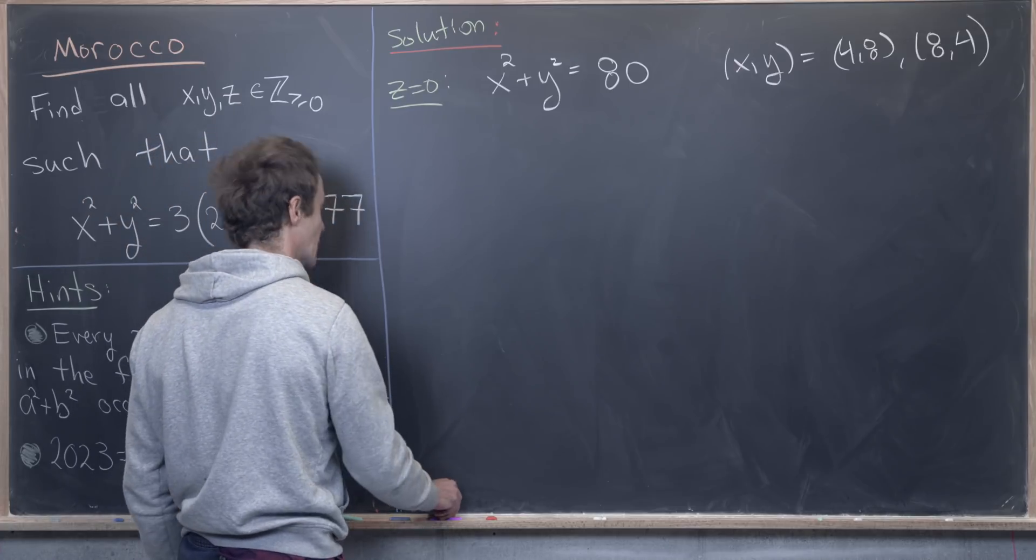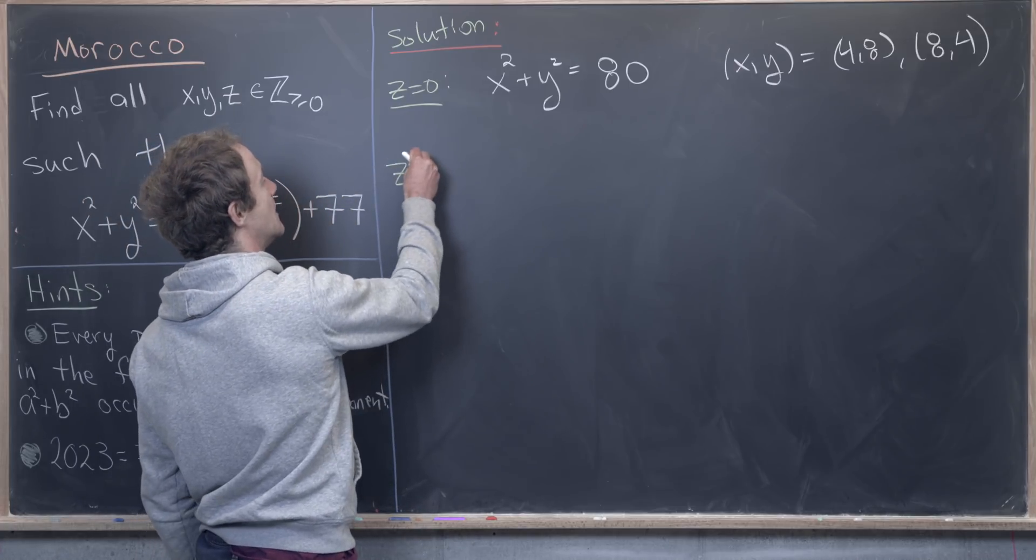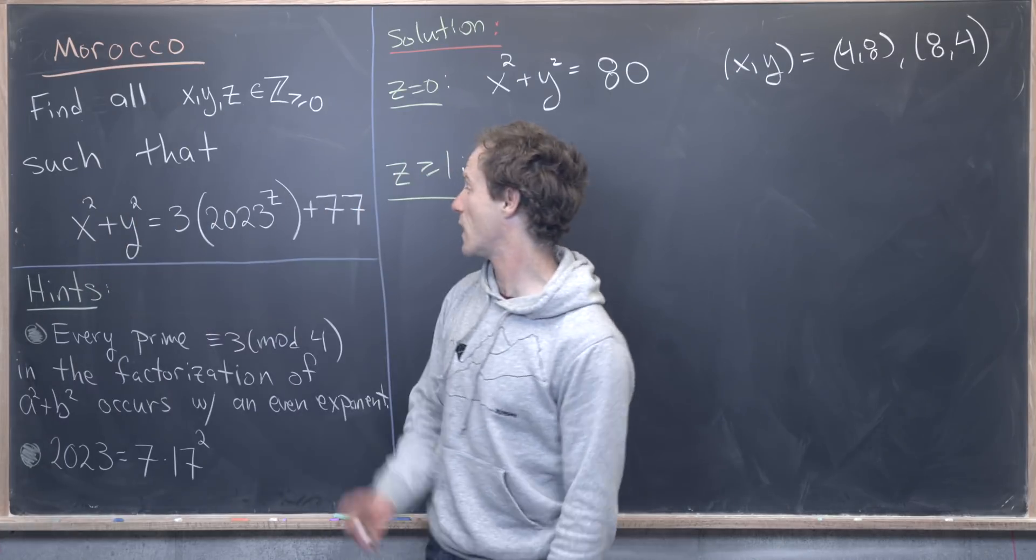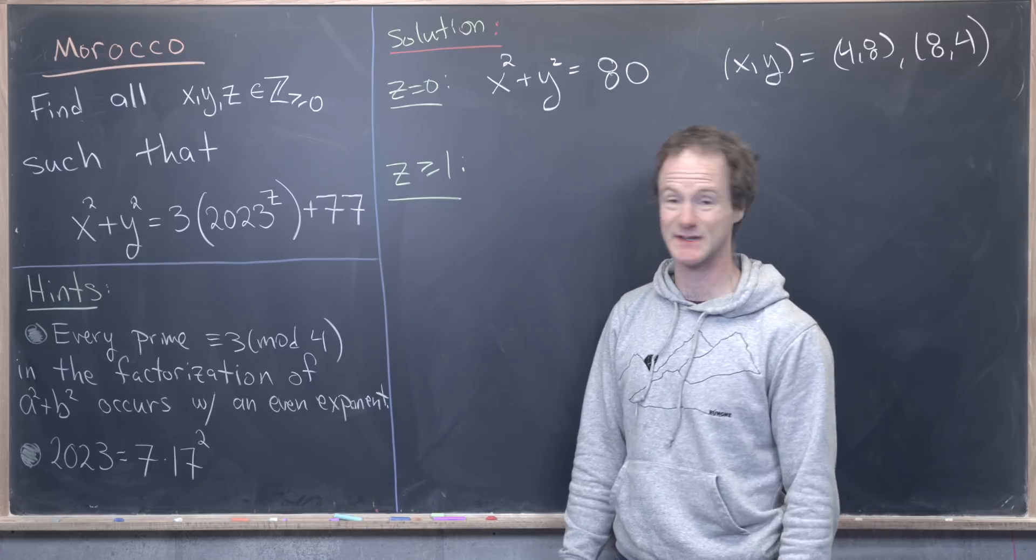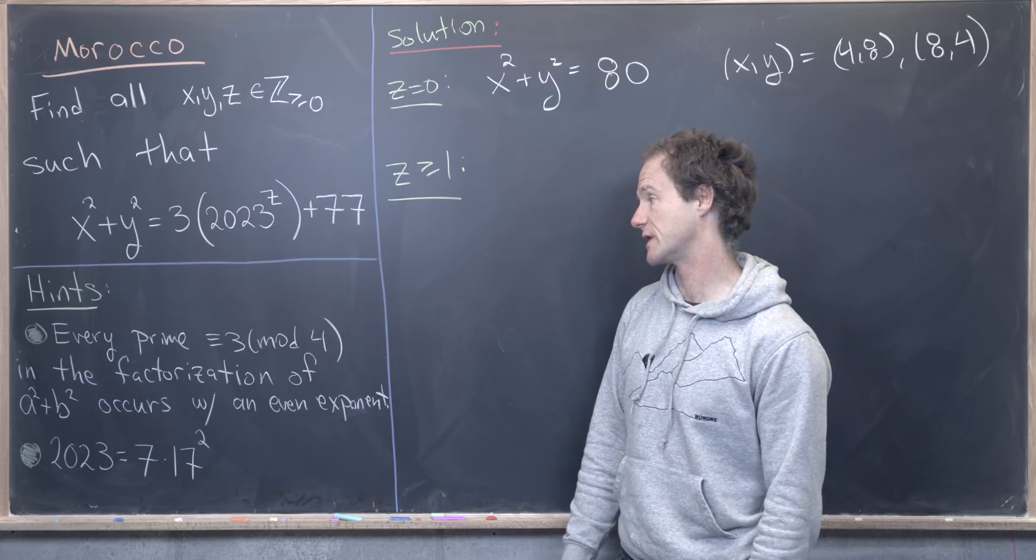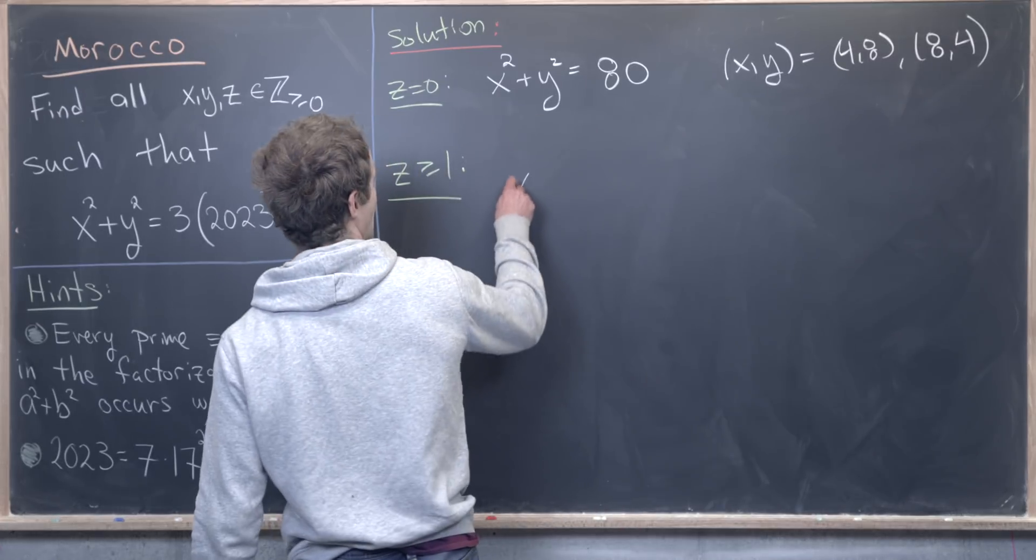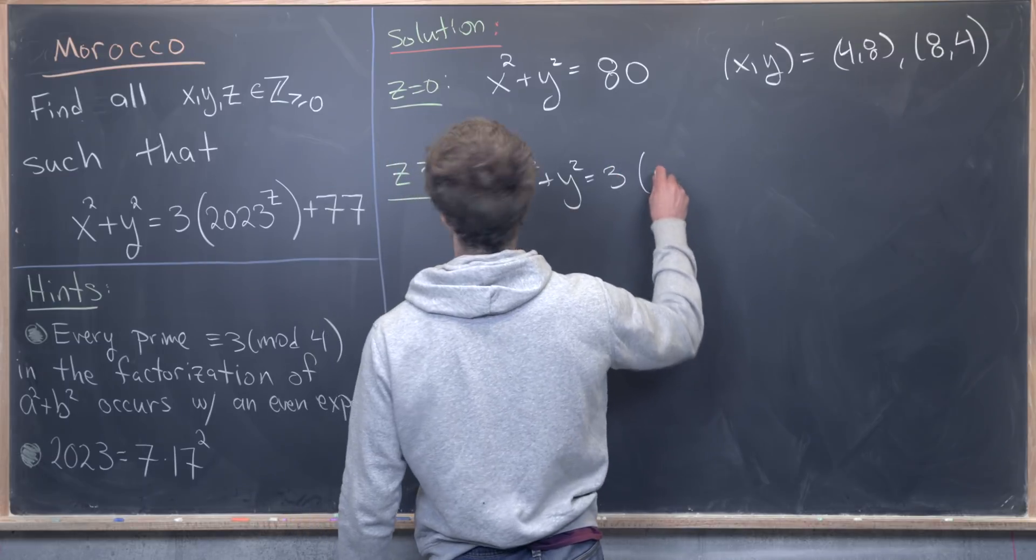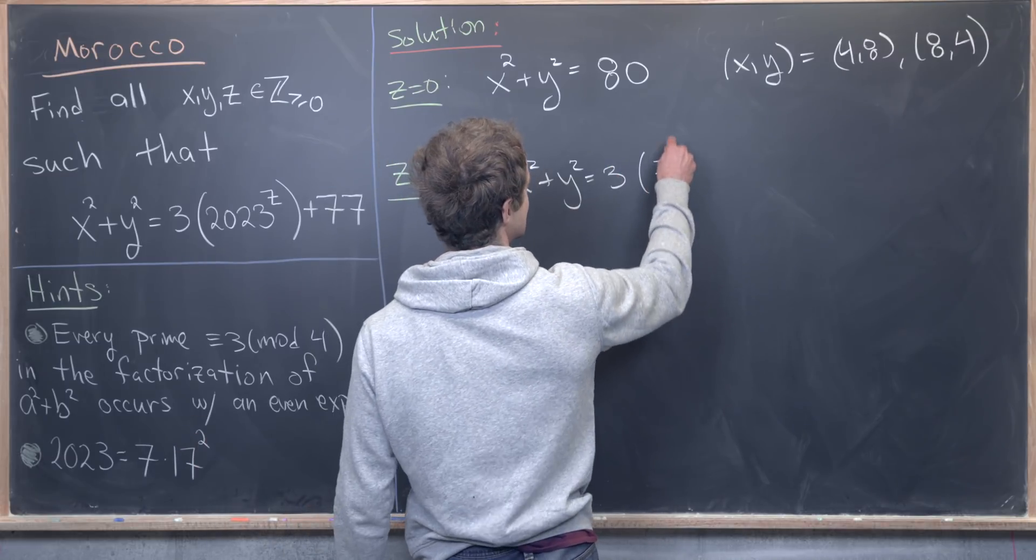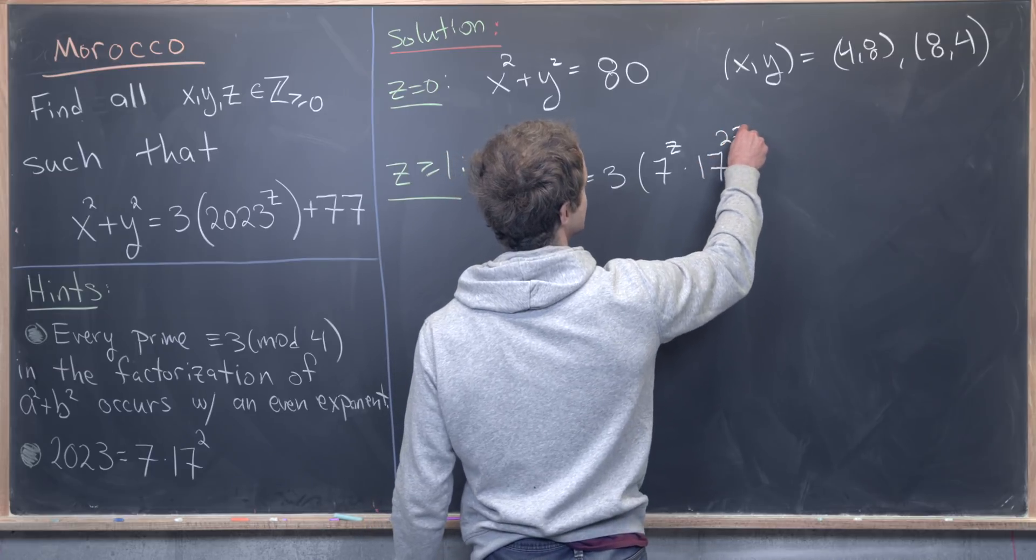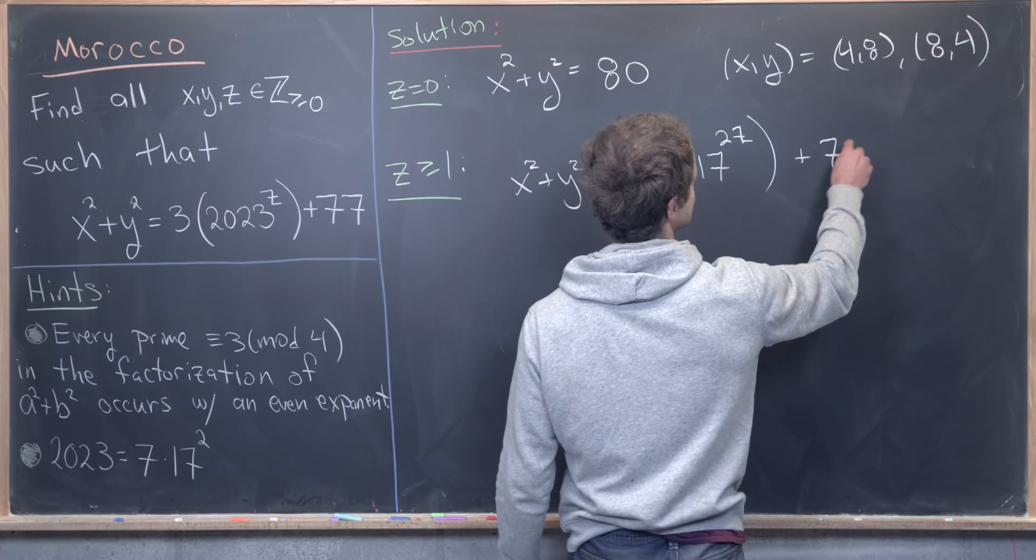Okay, so now let's move into case two. And case two will be given by z bigger than or equal to 1. That means we can take this equation, write 2023 as 7 times 17 squared, and then maybe mess around with it a little bit. So let's see what we get. So we'll have x squared plus y squared equals 3 times 7 to the z times 17 to the 2z, and then plus 77.